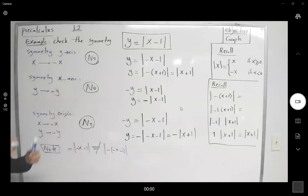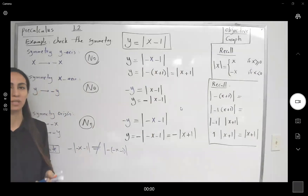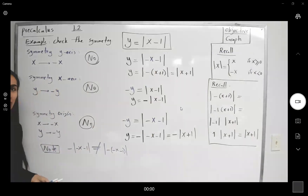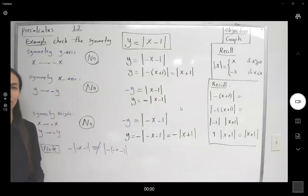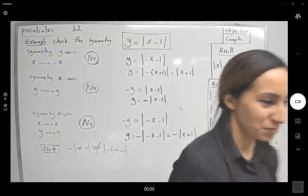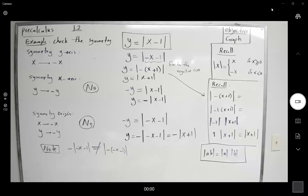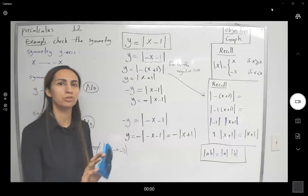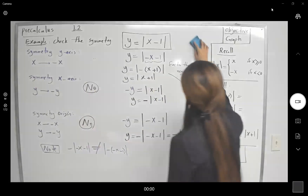So we just went over one example that is not symmetric with respect to the x-axis, not symmetric with respect to the y-axis, and not symmetric with respect to the origin. Many graphs, relations, and functions are not even symmetric. Now we're going to use paper and pencil to graph y = |x − 1|.